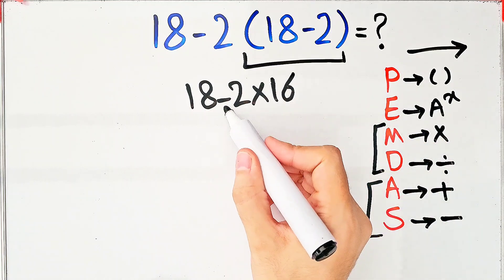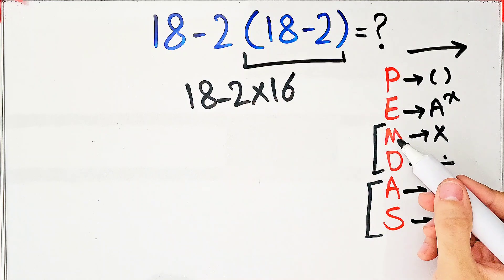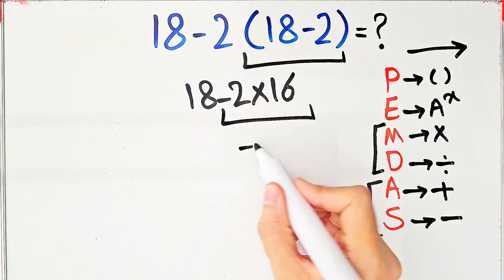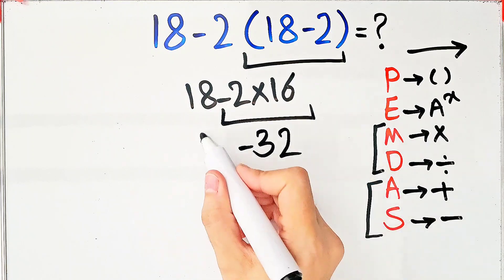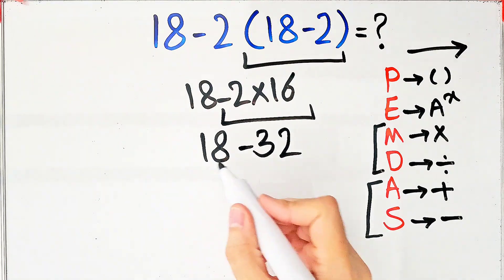Now we have subtraction and multiplication. First, we do this multiplication because the multiplication has higher priority than subtraction. Negative 2 times 16 equals negative 32. Now we have 18 minus 32, and 18 minus 32 equals negative 14.